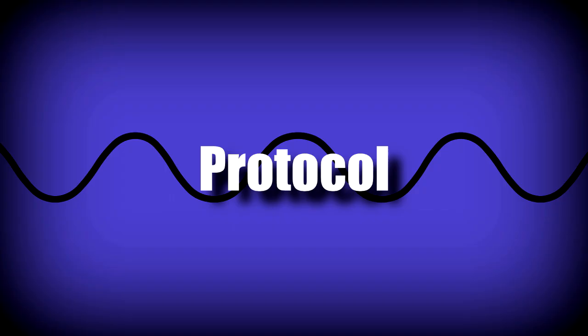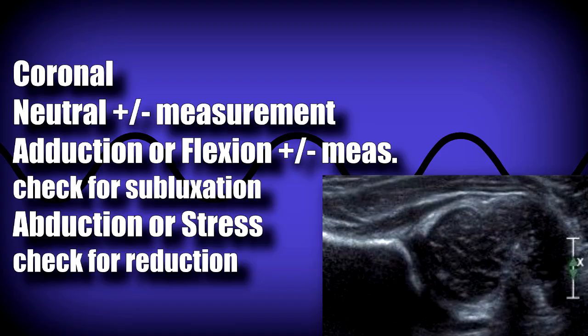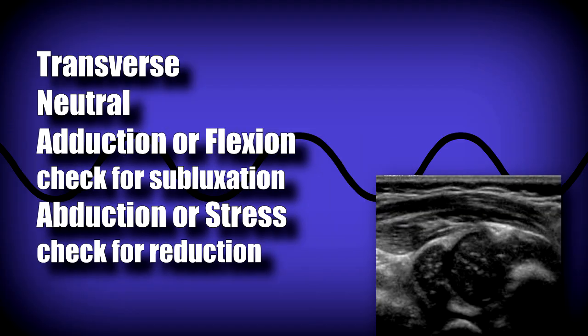The typical protocol consists of a series of coronal and transverse images. In the coronal plane, scan the baby in lateral decubitus — the more preferable position — with the leg in a neutral position. You may need to measure in this plane depending on your institution, as protocols vary: some will have you measure in neutral, others in adduction, some in both. Take your adduction and abduction images in coronal as well. After you're done, take your transverse images in neutral, abduction, and adduction.